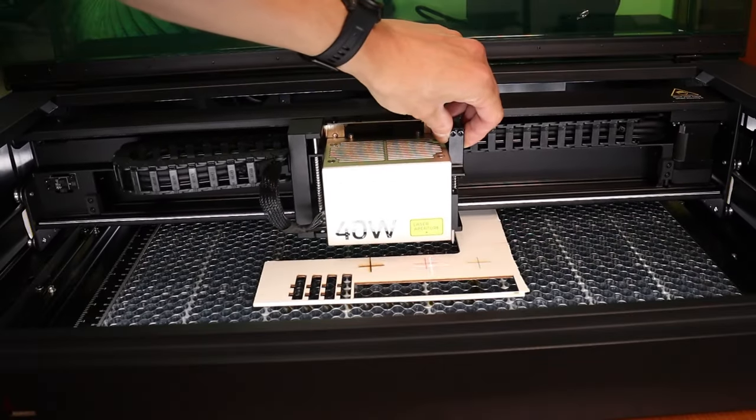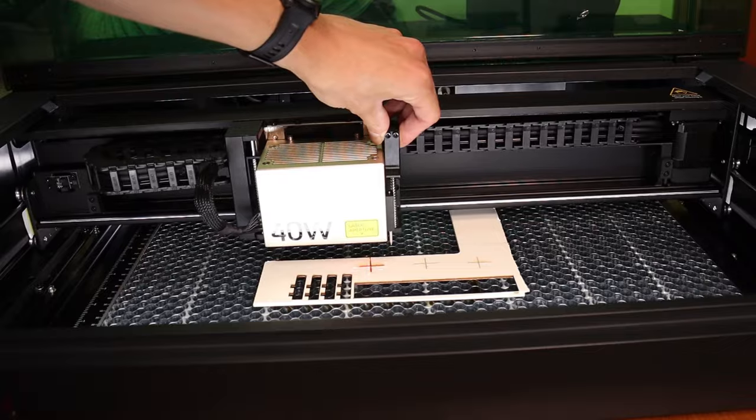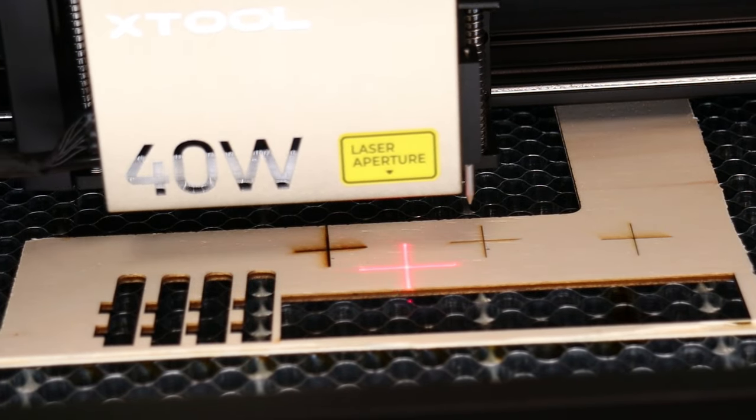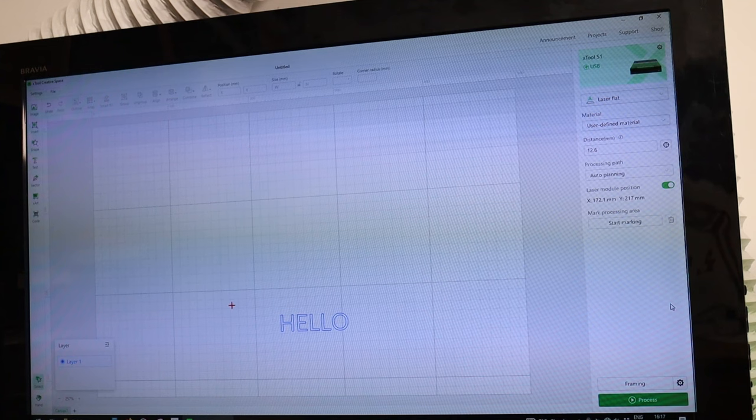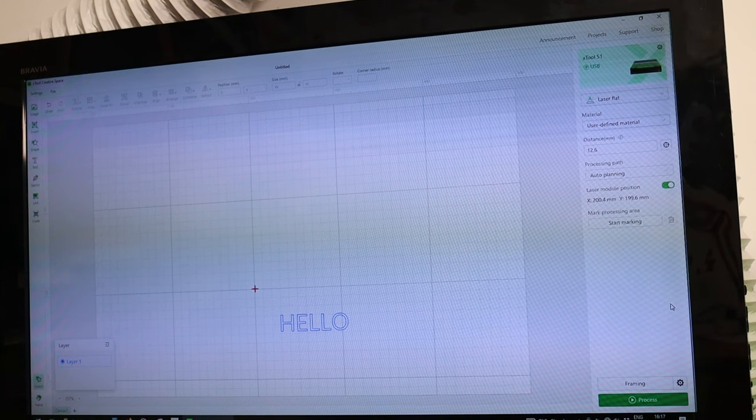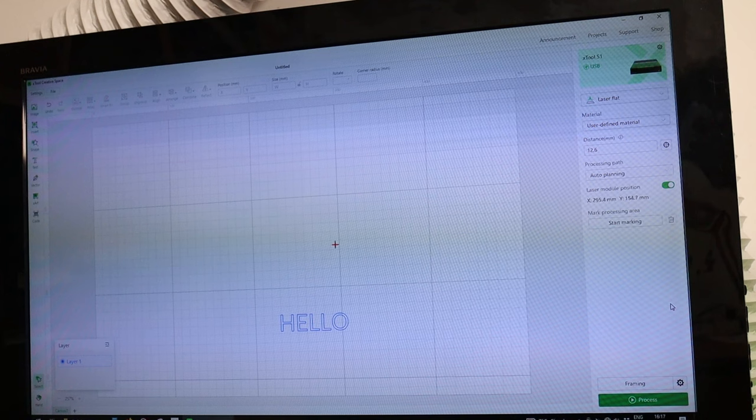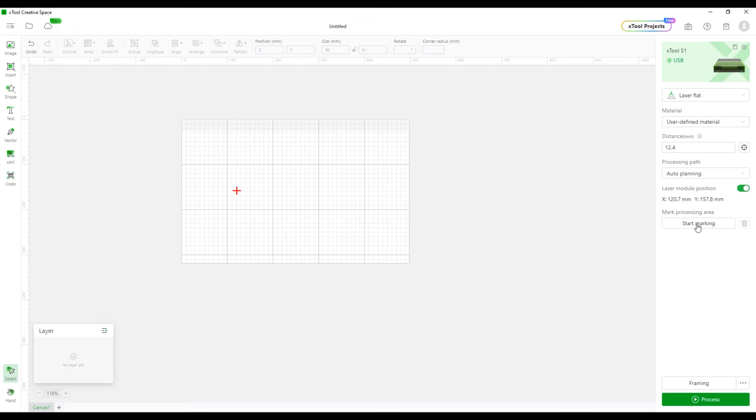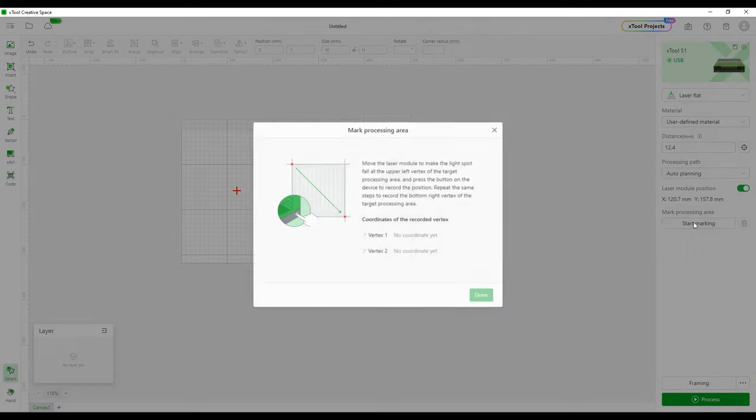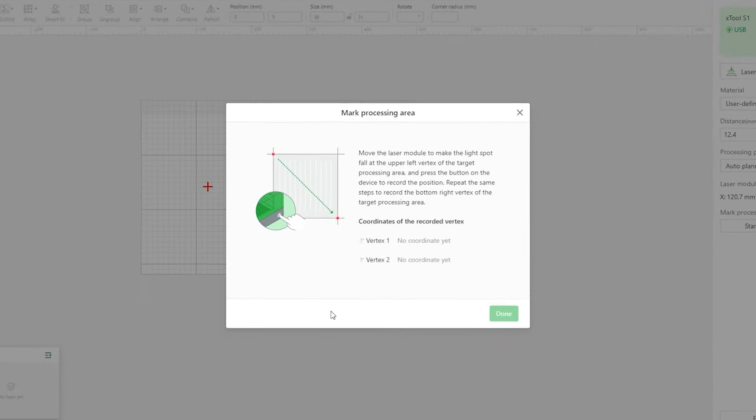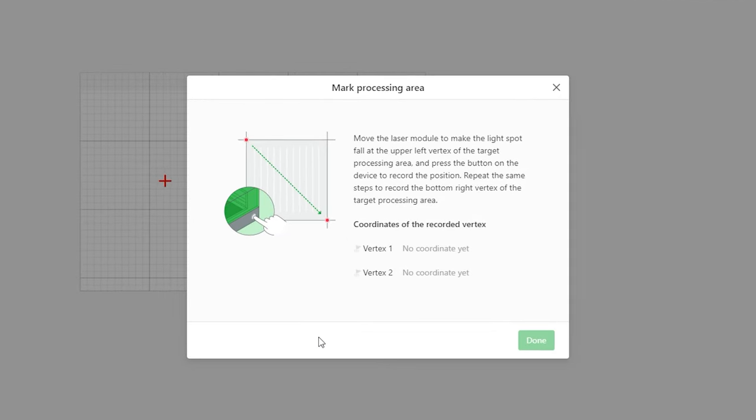X-Tool S1 features precise position encoders on both axes. Because of that, the machine always knows where the laser head is located, even if you move the laser head by hand. This is a feature no other laser engraver currently has. Thanks to this feature, the X-Tool S1 can offer a very practical two-point positioning system that ensures precise and accurate laser engraving on various objects.